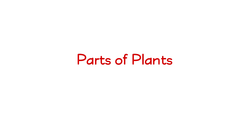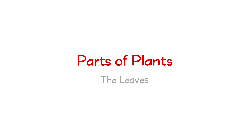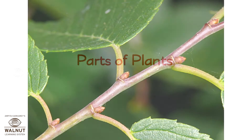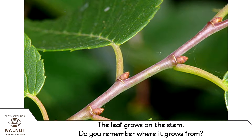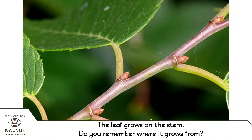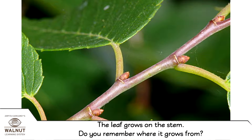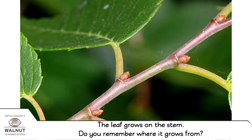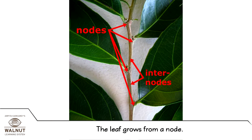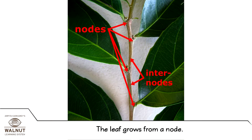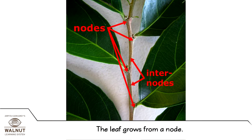Parts of Plants: The Leaves. The leaf grows on the stem. The leaf grows from a node.